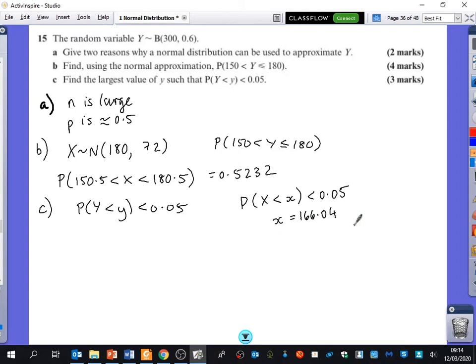So if we're going to then use the continuity correction to go backwards from this, if we're saying the probability that x is less than 166.04, if we change that into a discrete value, it would be the probability that y is less than or equal to 166. But in the back of the book, they've said that y is 166, haven't they? Which is kind of the opposite of what we're saying here.